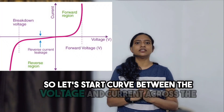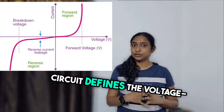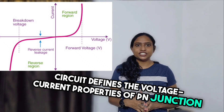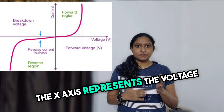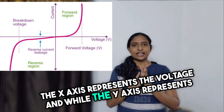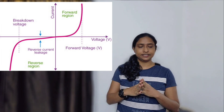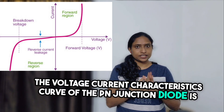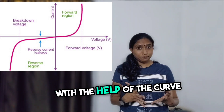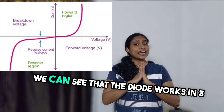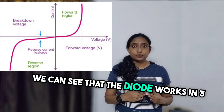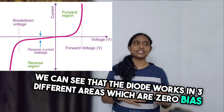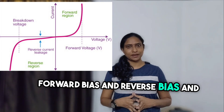The curve between the voltage and current across the circuit defines the voltage current properties of PN junction diodes. The x-axis represents the voltage and the y-axis represents current. The voltage current characteristics curve of the PN junction diode is shown in the graph here. With the help of the curve, we can see that the diode works in three different areas: zero bias, forward bias, and reverse bias.